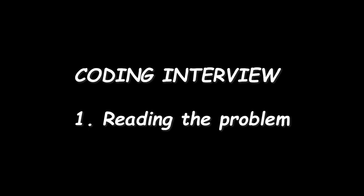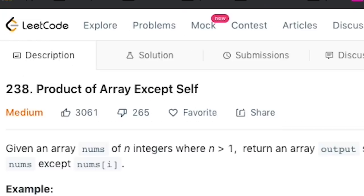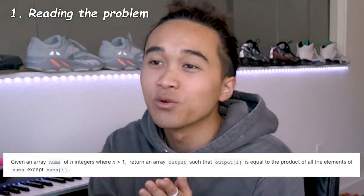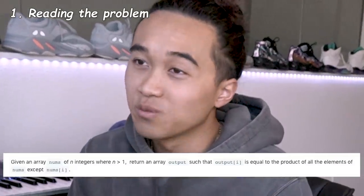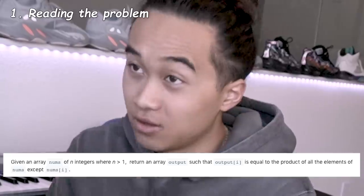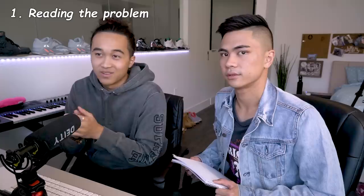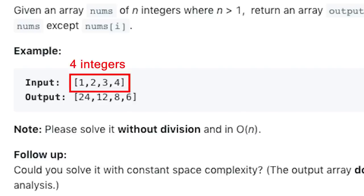Round one, fight. Okay, so first problem, product of array except self. You want to read that out? Yeah, so damn, I don't think I've seen this before. So given an array of n integers where n is greater than one, return an array such that the array output is equal to the product of all the elements of... I can't even read this out loud. It doesn't even make sense.